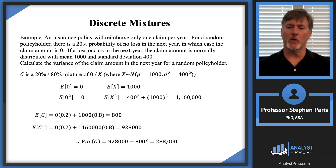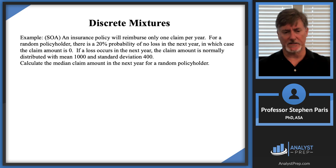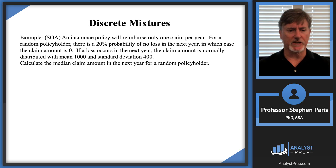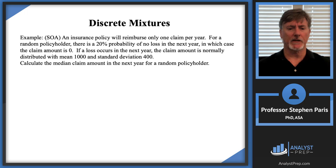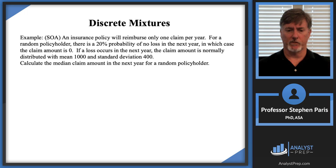Finally, let's do one more SOA exam example. An insurance policy reimburses only one claim per year — everything is exactly the same as before: a 20%-80% mixture where the claim is either zero or normally distributed with mean 1000 and standard deviation 400. This time I want to calculate the median claim amount for a random policyholder.